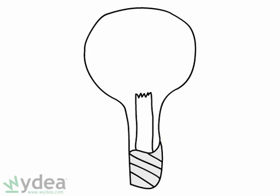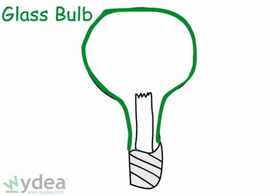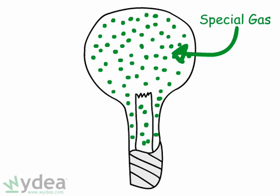An incandescent bulb has a few basic parts. First, there's the bulb that you're used to seeing. A bulb is typically a glass ball containing a special gas rather than air.